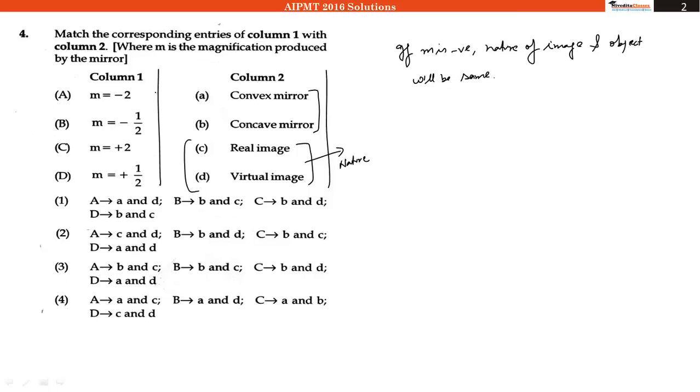So let us assume that we are given with a real object. So the image will be real if magnification is negative. What does it mean that in case of A and B we will get a real image which is C.